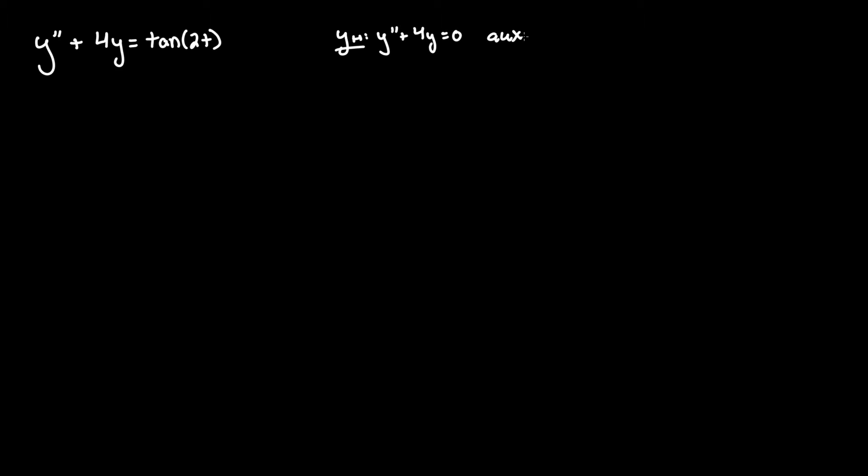We form our characteristic or auxiliary equation of this where one prime is one power of r and so on and so forth. So y double prime is r squared and no prime is no r but you keep the coefficients so r squared plus 4 equals 0 and I'll be rushing through this a little bit since I already covered this in my previous videos.